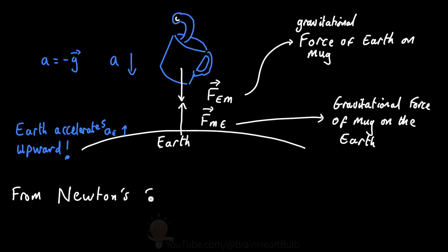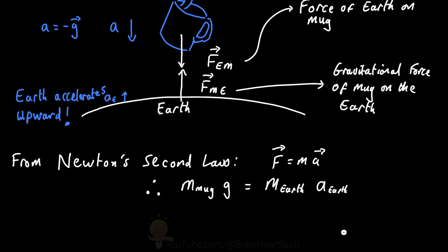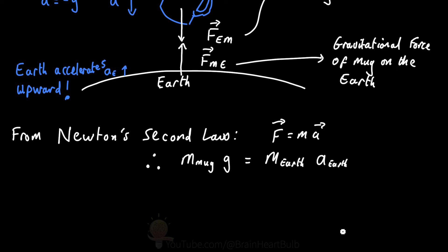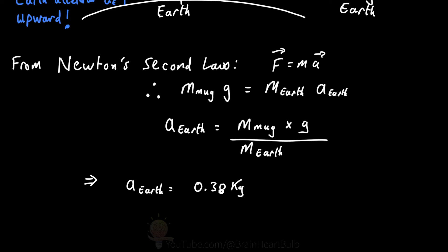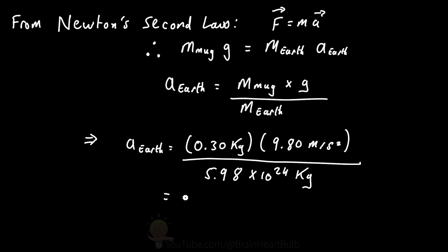We can also use Newton's second law here to find out what this upward acceleration would be. We know that due to Newton's third law, both the action and reaction forces are equal in magnitude. Newton's second law is the relationship of force, the inertial mass, and the resultant acceleration. If our coffee mug weighs 0.3 kilograms, we can rearrange this equation with the mass of the Earth to find that the acceleration upwards is 4.9 times 10 to the minus 25 meters per second squared, which is vanishingly small.